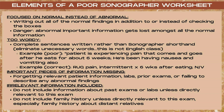Another mistake is including irrelevant information. Don't include information about past exams or labs unless they're directly relevant to the exam. For example, if a patient is there for an abdominal ultrasound, it's not necessary to mention x-rays of the foot. This also applies to family history — don't include family history unless directly relevant, especially for distant relatives. For instance, noting that a patient's father had a heart ultrasound has no bearing on an abdominal ultrasound exam.